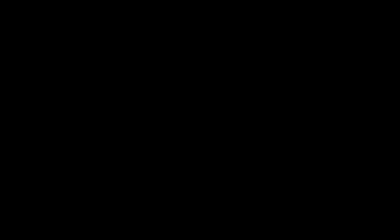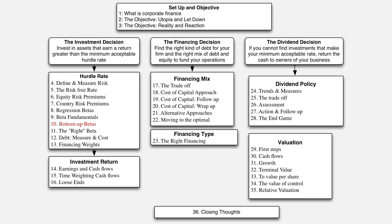To understand this, let's go back. We're trying to estimate the hurdle rate for a company. We talked about risk-free rates, equity risk premiums, and we're now in the process of talking about betas. We've laid the foundations by looking at regression betas and the determinants of betas. Now let's talk about a process for estimating betas that's better than a regression beta process.